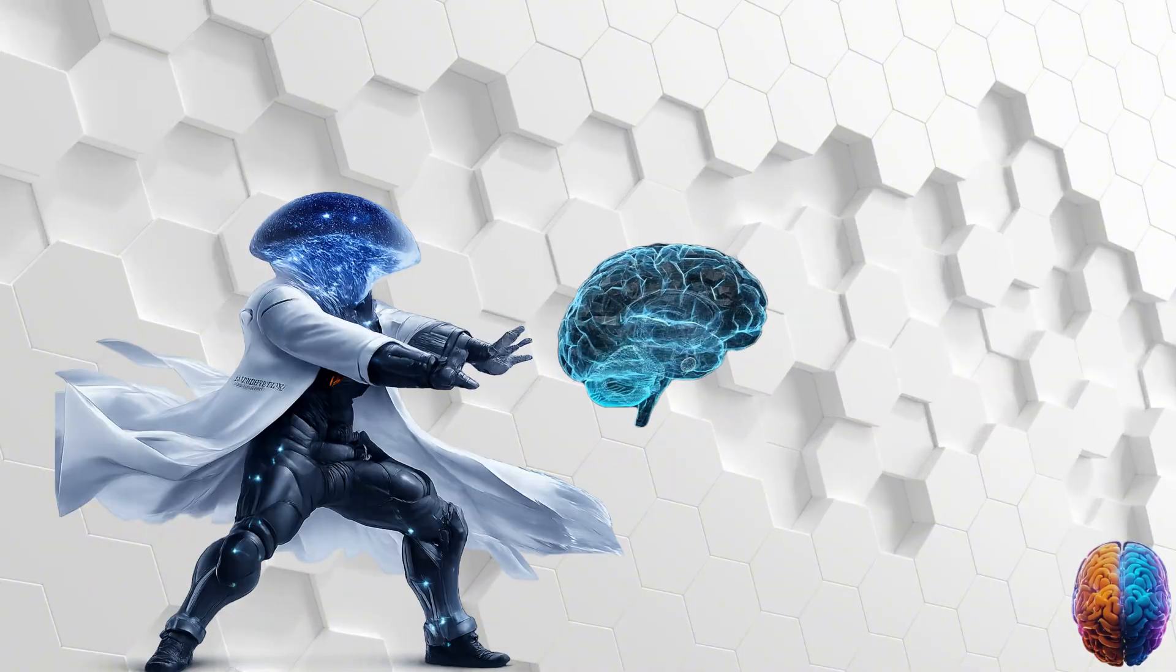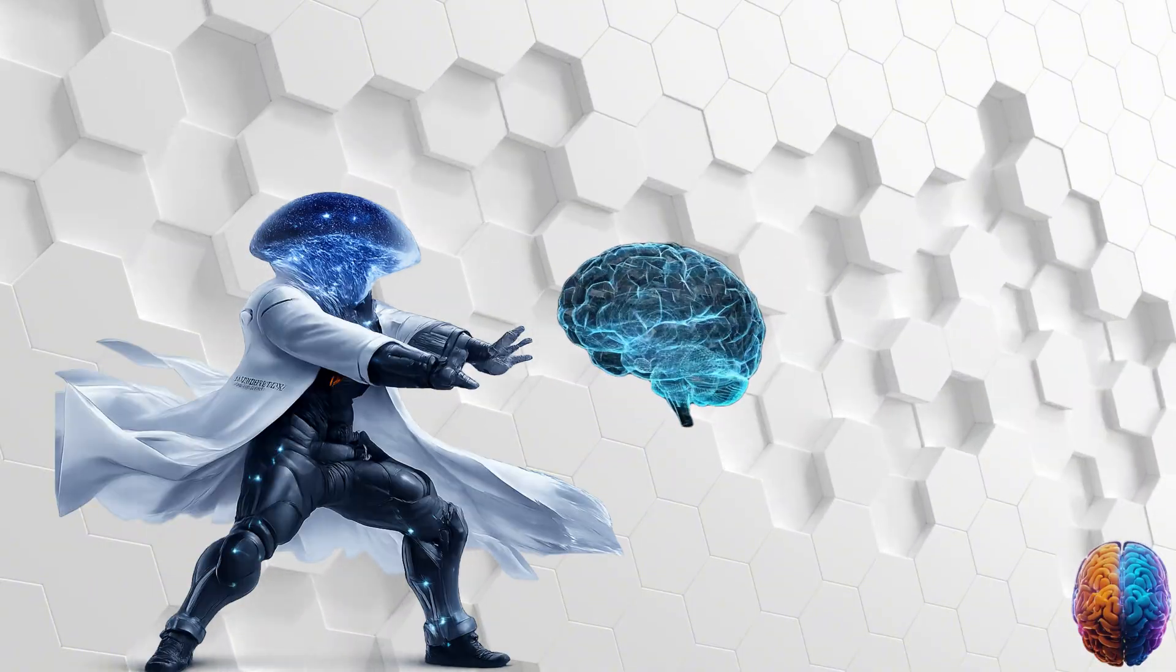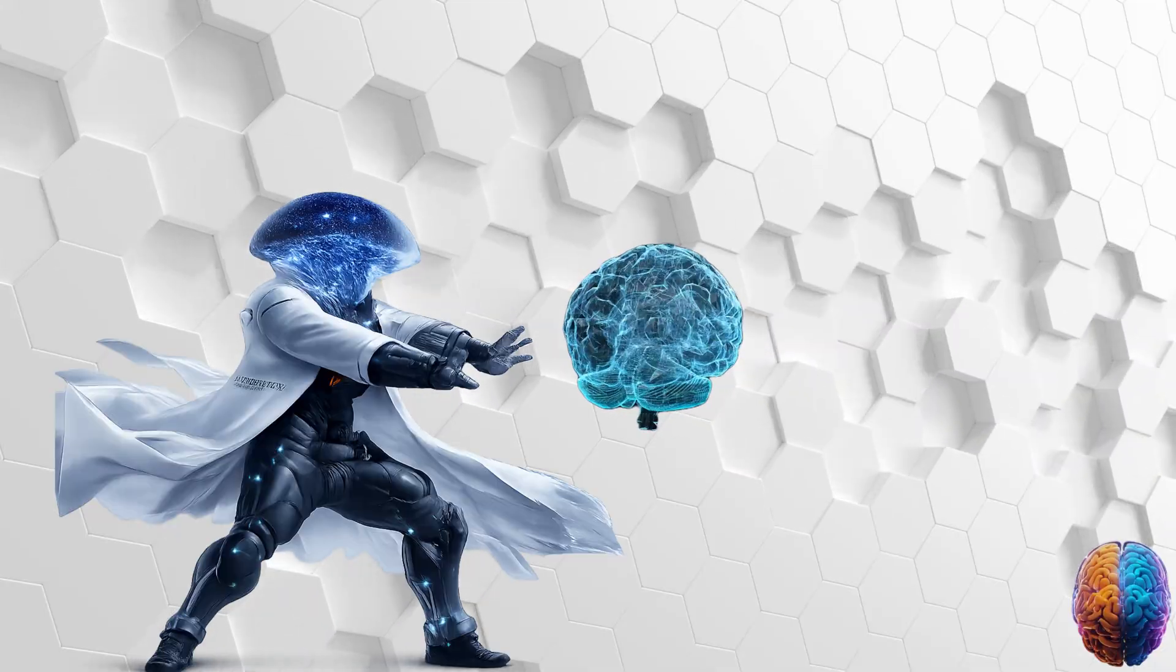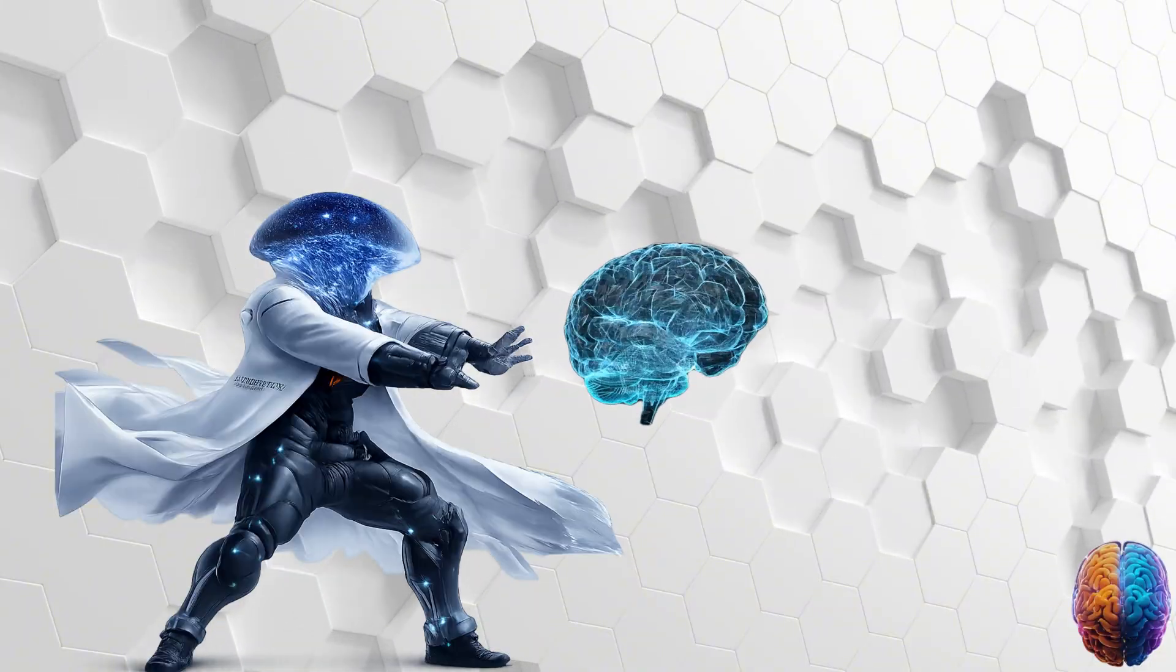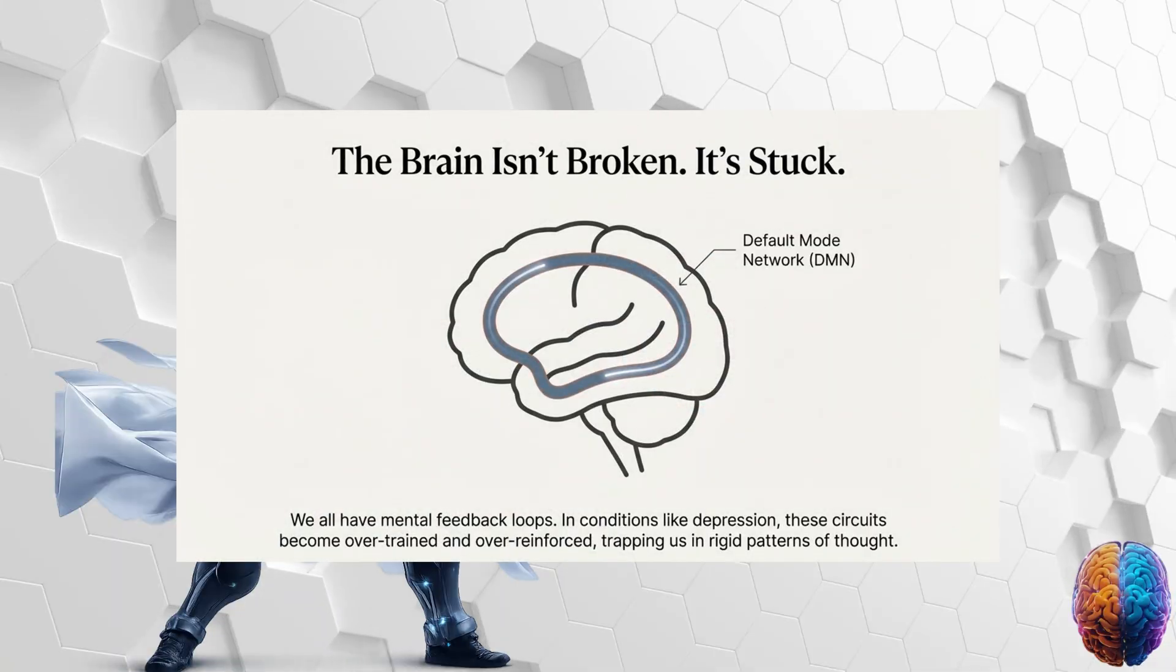Okay, so let's set the stage. To really get why this is so revolutionary, we first have to understand the problem. Why would a brain need rewiring at all? We used to talk about a chemical imbalance. For decades, that was the model. But this new research points to something else. It's not just chemistry. It's about the brain's structure getting stuck. It's about rigidity.